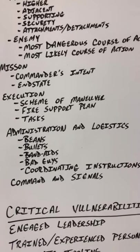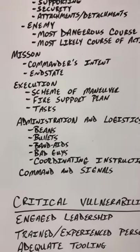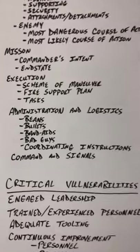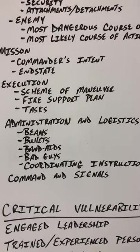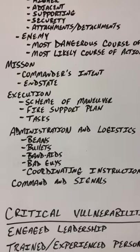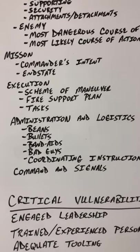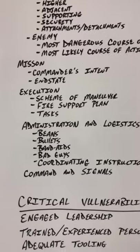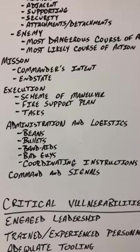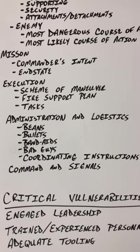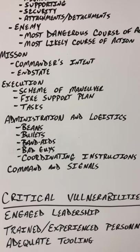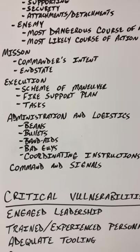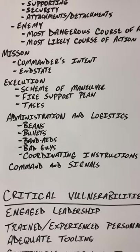Execution is divided into three sub-paragraphs: scheme of maneuver, fire support plan, and tasks. Scheme of maneuver covers the inflow of your personnel and tooling — how you expand and collapse your workforce or footprint in accordance with your work scope. The fire support plan is how you prep your objective or work area: when you bring in cranes, TGR guys, and instrument guys — shaping the battlefield to accomplish your mission. Tasks are the crew members executing the various sub-tasks within the work scope.